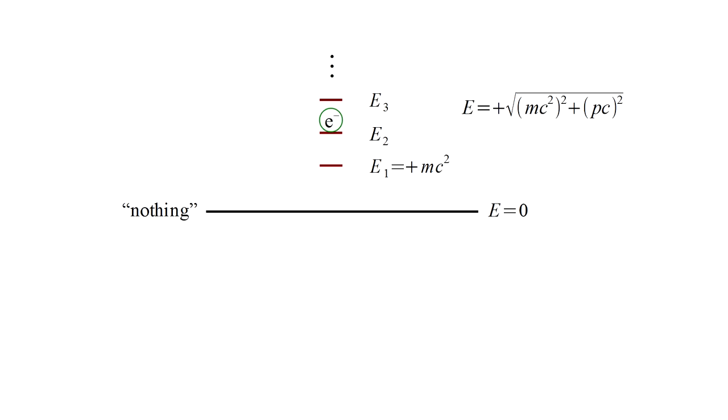And this continues without limit towards E equals infinity. Suppose an electron has energy E2. It can drop to energy E1 with the emission of a photon. If this is the lowest possible energy state, the ground state, then the electron would remain there indefinitely.